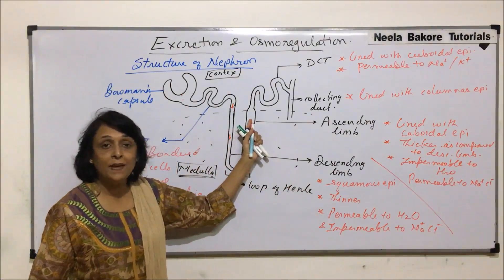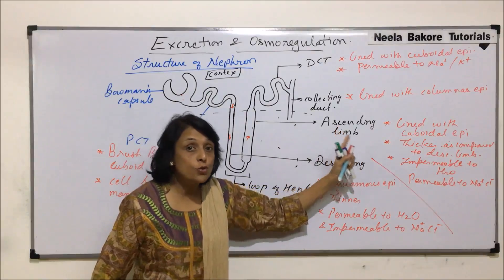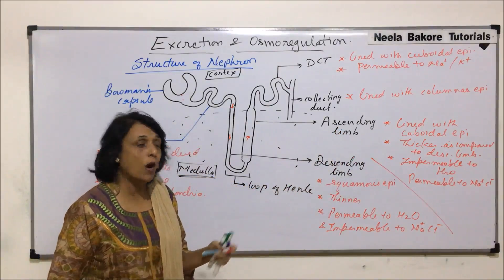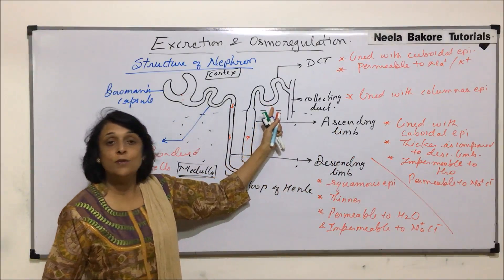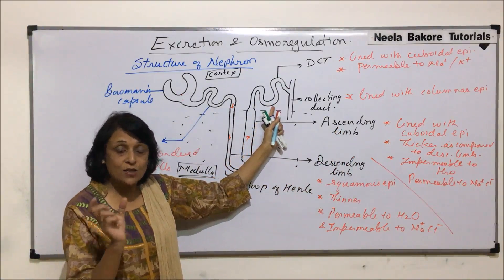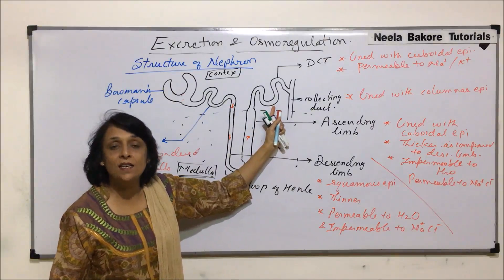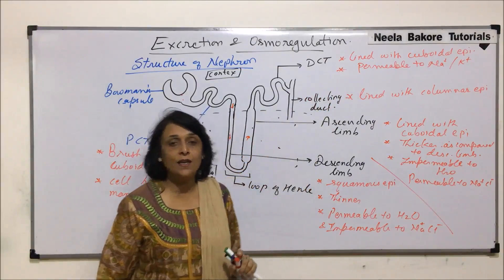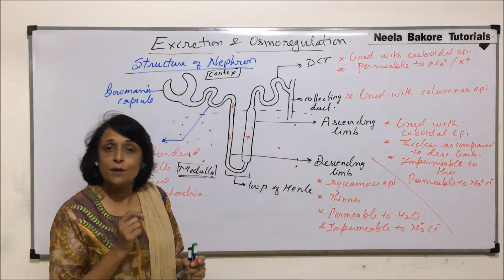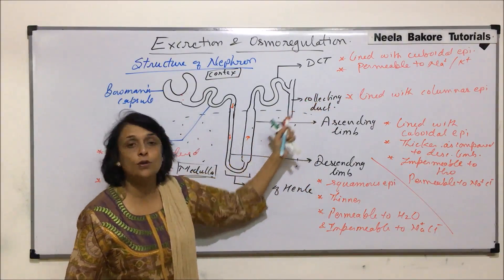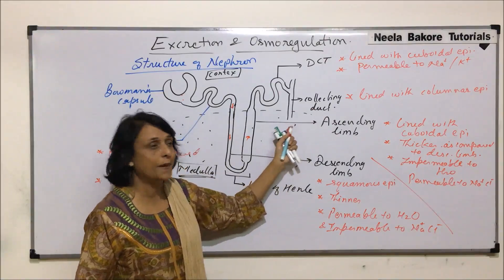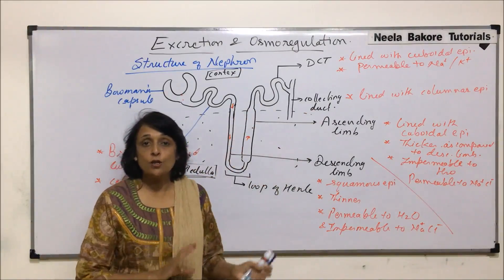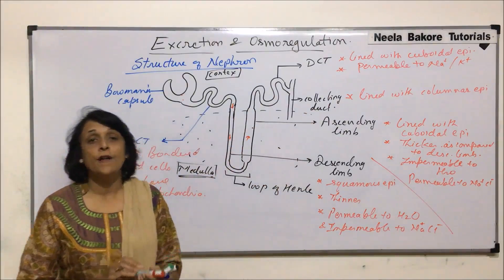The ascending limb is permeable to salts, so it helps make urine a little more concentrated. Then comes the last coiled part of the nephron — the distal convoluted tubule. It is lined with cuboidal epithelium with few microvilli, because here also absorption of ions takes place. Finally it leads into the collecting duct. So this is the structure of the nephron — we have seen all the different parts and what they are made up of.